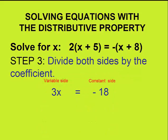We need to get rid of the 3. 3 is multiplied to x, so to eliminate the 3, we'll divide both sides by 3, giving us our answer of x equals negative 6.